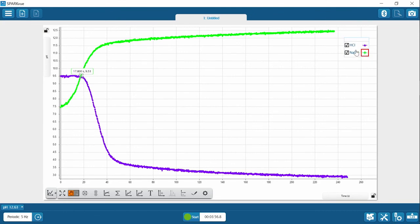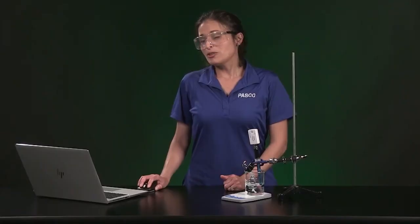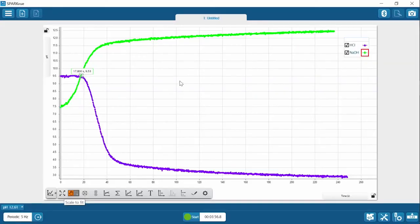To view both runs at the same time at full scale, make sure both runs are checked in the legend. Then hit the scale button. You should be viewing both runs fully scaled when you complete Graph 1 as directed in the instructions.